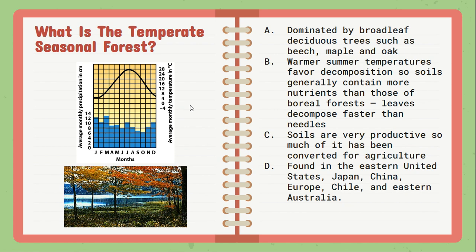Moving on to the temperate seasonal forest — this is the type of biome we reside in here in the northeast. We see a fairly consistent amount of precipitation throughout the year and temperature that fluctuates. This biome tends to be dominated by broadleaf deciduous trees that lose their leaves in the fall. We get warmer summer temperatures, which actually favor decomposition — the warmer it is, the faster materials break down — meaning soils tend to have decent nutrients. So soils are very productive and can be converted for agricultural purposes.